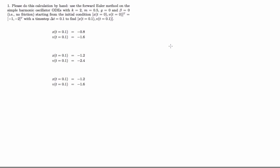The first task here is to plug the constants into the equations to see what we're working with. Here are the simple harmonic oscillator equations. And here's what I get if I plug in g equals beta equals zero, k equals two, and m equals 0.5. Here's the initial condition we're starting from.